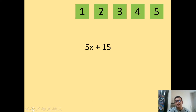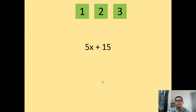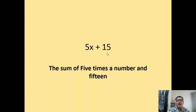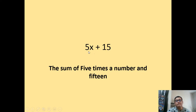Another example: 5x plus 15 — how are we going to translate this into an English statement? The correct answer is: the sum of 5 times a number and 15. Since the main operation is plus or sum, we get the sum of 5x and 15. x represents a number, so we get the sum of 5 times a number and 15. This is just a review of your algebra in high school.